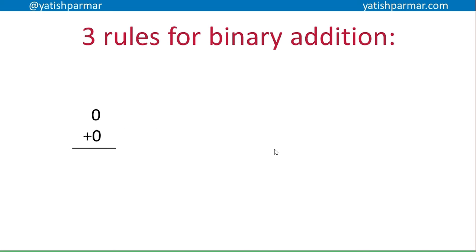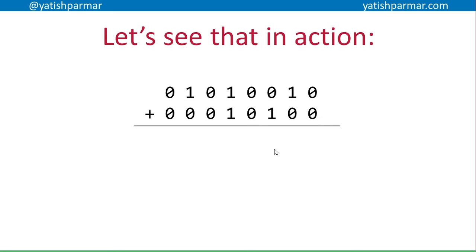First of all, zero and zero gives you a zero. One and zero gives you a one. Then one and one gives you a zero, and you carry one into the next column — just like when you're doing nine plus one: it gives you a zero in the units column and you carry a one into the following column. The half rule is that when carrying forward, if you've got a one plus zero and also a carry, then it's one plus one plus zero, which is the third rule again.